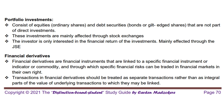Category 2: Portfolio investments. This category includes equities, ordinary shares, and debt securities like bonds that aren't part of direct investments. These investments are often made through stock exchanges. Investors here are mainly interested in the financial returns they can get. Think of a South African investor buying shares in a big American tech company through the Johannesburg Stock Exchange, JSE — it's all about making money.